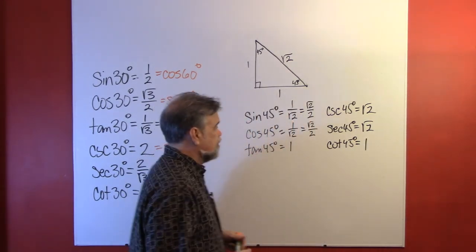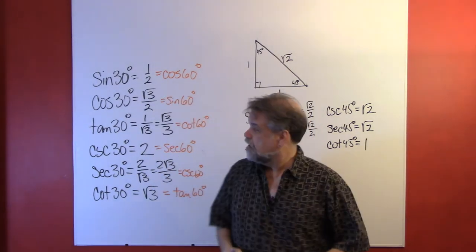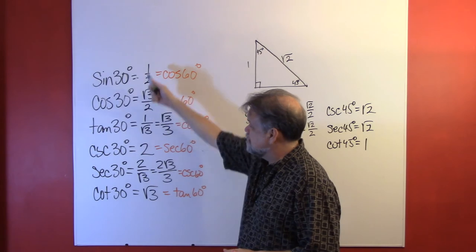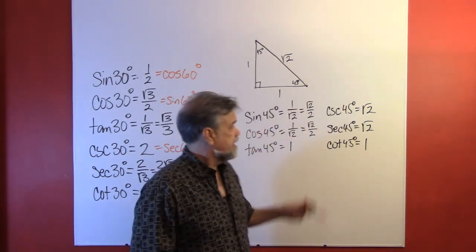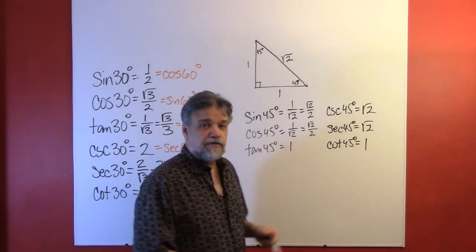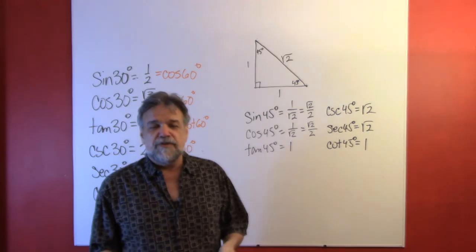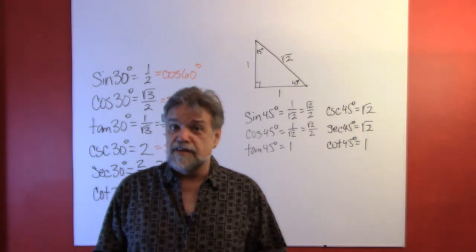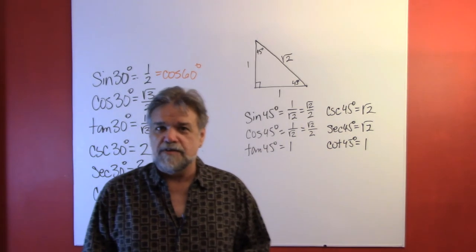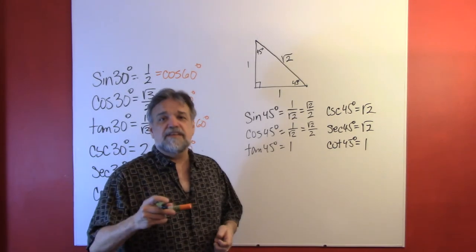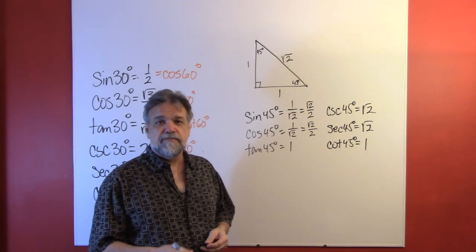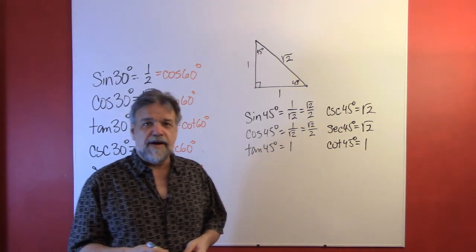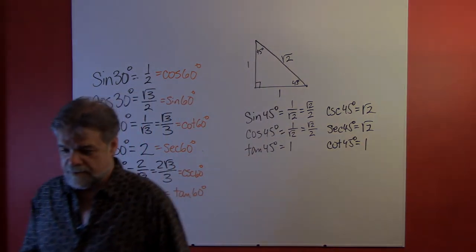So there you go — we have all six trig functions of 30 degrees, 60 degrees, and 45 degrees. These are frequently referred to as the special angles, and we're going to be seeing a lot of these in the future. See you in the next video. Bye-bye.